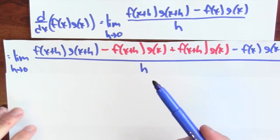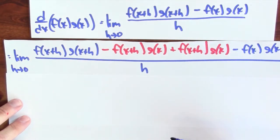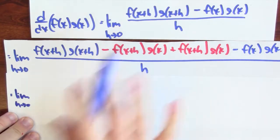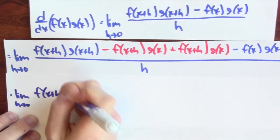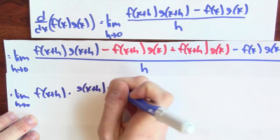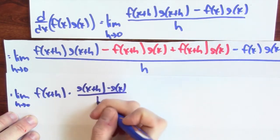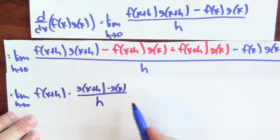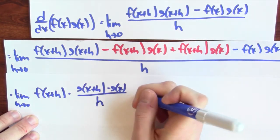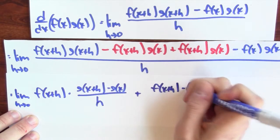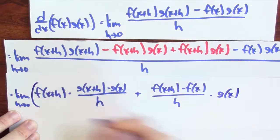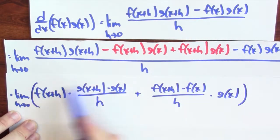I can collect those out and good things will happen as a result. This is the limit as h goes to 0. I pull out the common factor of f(x+h) and multiply by what's left: g(x+h) minus g(x), put over h. For the remaining terms, there's a common factor of g(x), and what's left is f(x+h) minus f(x), divided by h, times g(x).